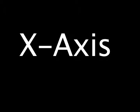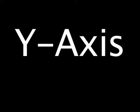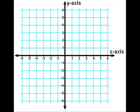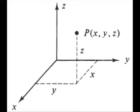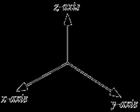The x-axis and y-axis represent the first two dimensions. The z-axis is the third dimension. The x and y denote width and height.